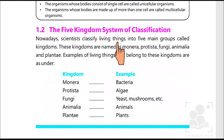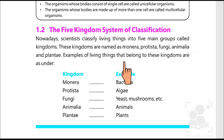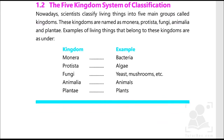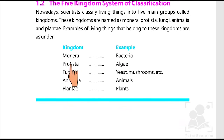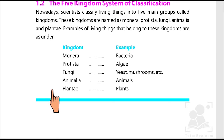Now the five kingdom system of classification. Nowadays scientists classify living things into five main groups called kingdoms. These are named as Monera, Protista, Fungi, Animalia, and Plantae. Examples of organisms belonging to these kingdoms are: Kingdom Monera — bacteria; Protista — algae; Fungi — yeast and mushrooms; Animalia — animals; Plantae — plants. So these are all five categories or kingdoms in terms of science that classify living things.